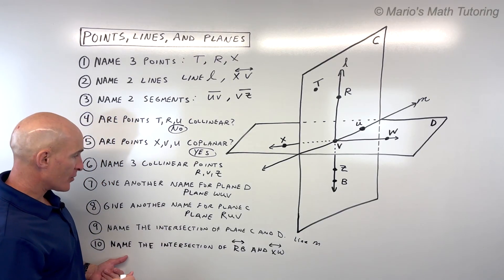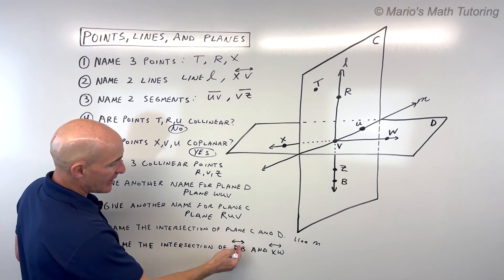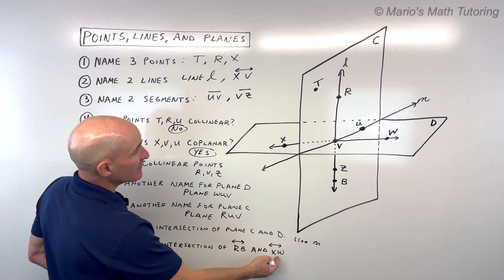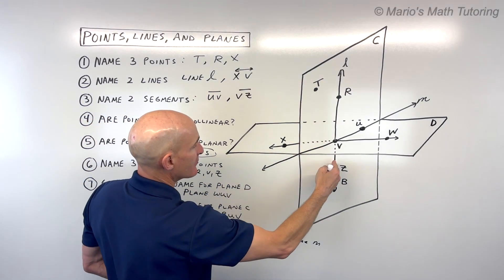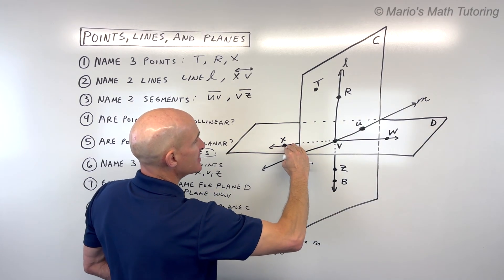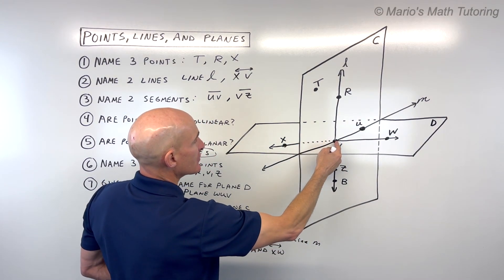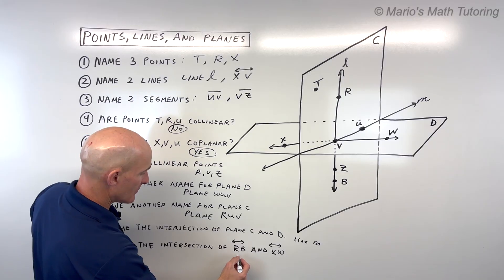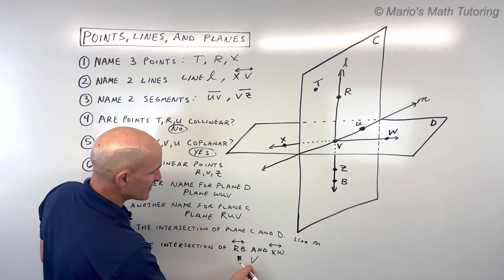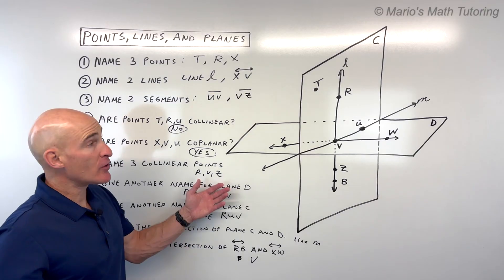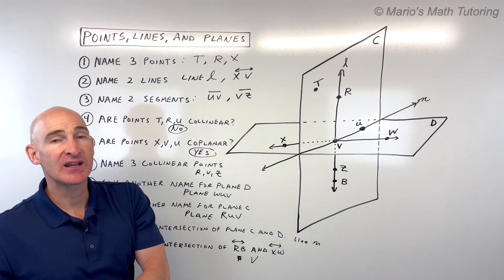For number 10, name the intersection of line RB and line XW. RB is this vertical line, XW is this line right here. It looks like they're crossing right at point V. You could just say V or point V. Let me erase the whiteboard and do the next 10 questions.